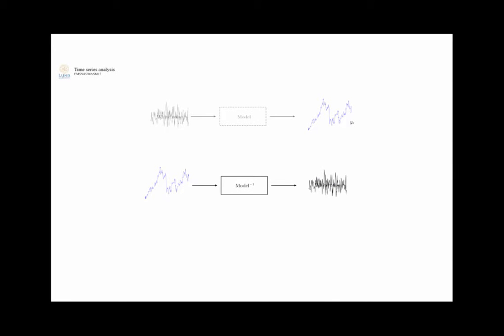We take the data and run it through the inverse model, trying to see if we can create something that is white noise. The reason is that if it is white noise, it doesn't contain any structure—there's nothing more you can model to make the model better, nothing you can extract that is not completely random. So we will be very interested in determining if something is white noise or not: is this a signal? Is it Gaussian? Is it white? These are going to be very important questions.